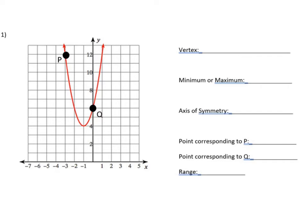So looking at this graph, our vertex is right here, and we name the vertex as an ordered pair. So in this case, it will be (-1, 4).